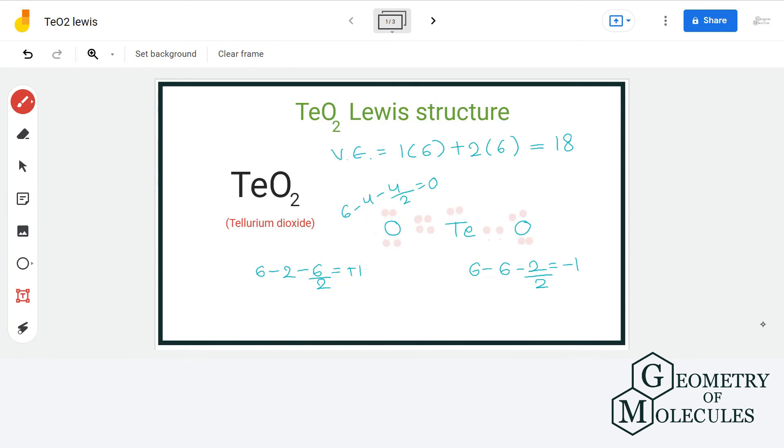Doing that, the formal charge on each atom present in this molecule is zero, and here tellurium has more than 8 electrons in its outer shell, but that's okay as it can hold more than 8 electrons and can form expanded octet. So this is the final Lewis structure of TeO2.